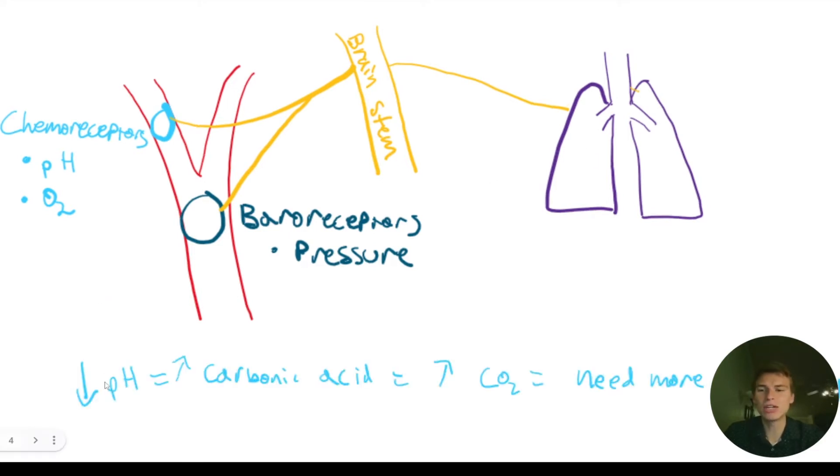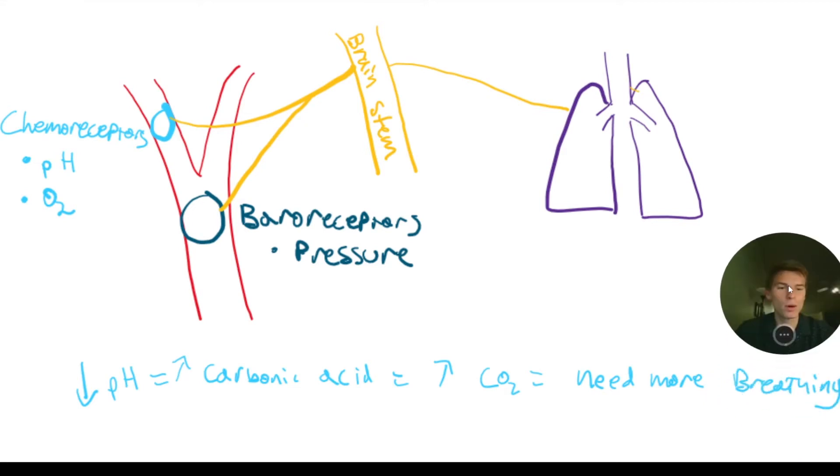If we have a decreased pH, that means we have increased carbonic acid in our blood. And where did that carbonic acid come from? It came from our CO2. And so if we have increased carbonic acid, that means we have increased CO2. And if we have extra CO2 in our blood, we need to get rid of that. How do we get rid of that? By breathing. So we need to do more breathing if we have a decreased pH in our blood.